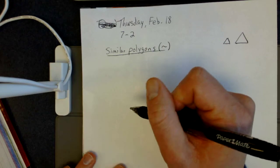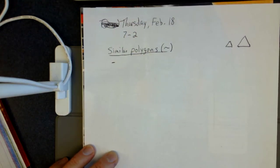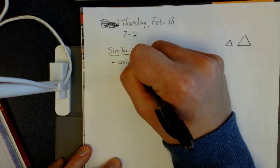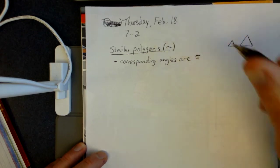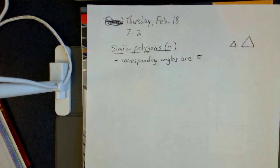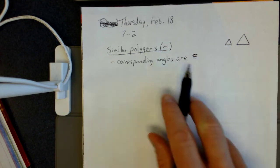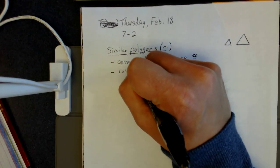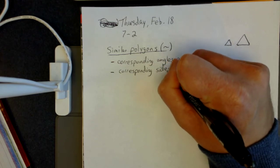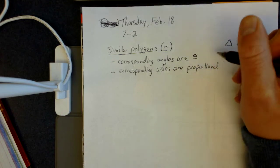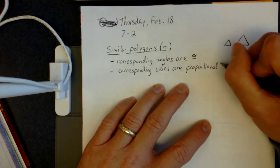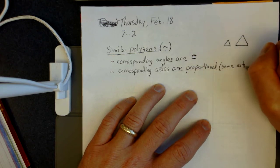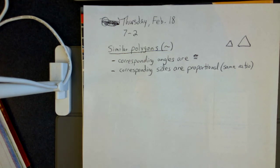Here is the big thing. When we have similar polygons, there are two things that will always happen. The first one is their corresponding angles will be congruent. That's the easy one to remember. The one that's a little harder to remember is that corresponding sides will be proportional. Some of you used the word proportional; some said they had the same ratio — those two are the same thing. Typically in geometry we'll call it proportional when they have the same ratio.